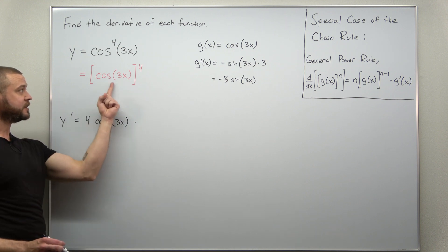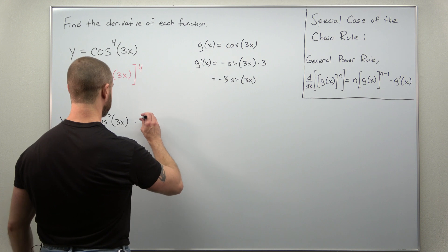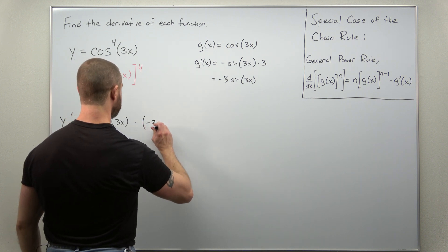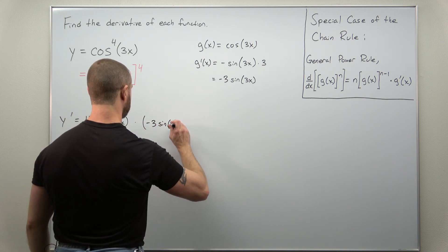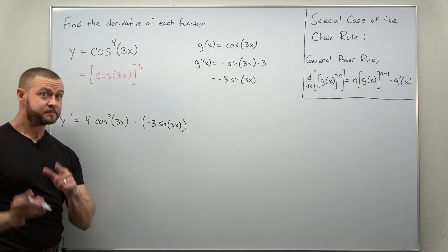But now we need the derivative of the inner function. That's what we calculated g prime there, which is negative 3 times sine of 3x. And that's it.